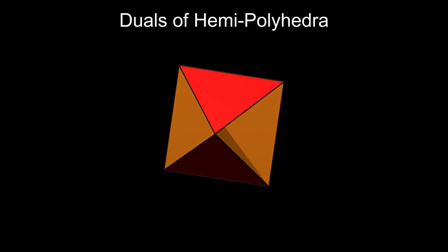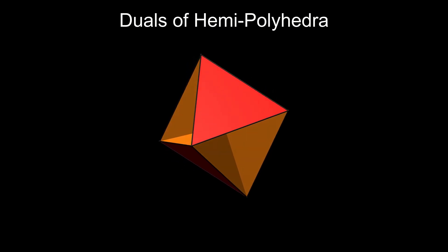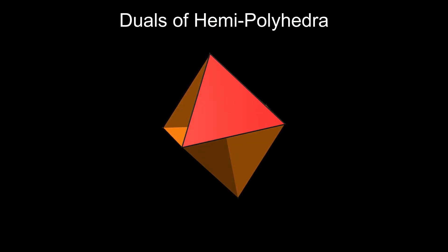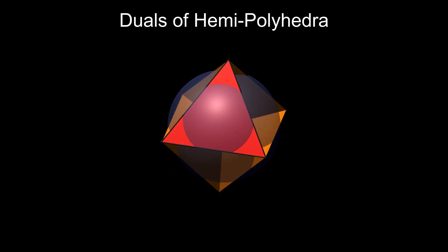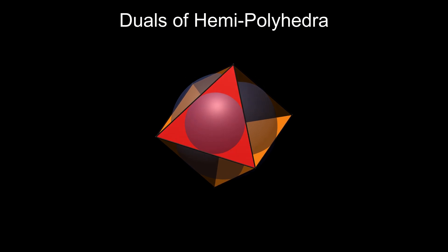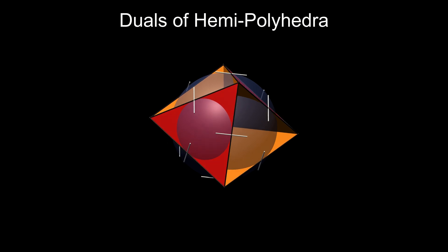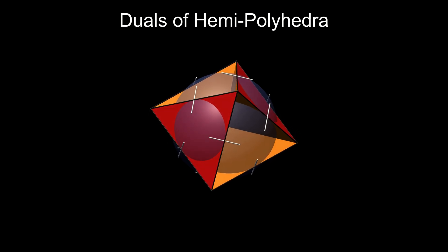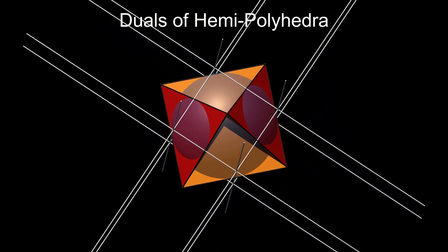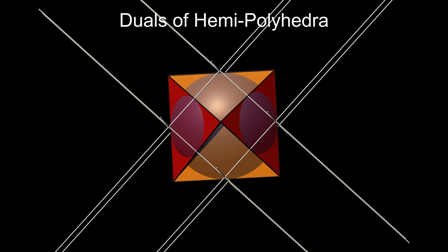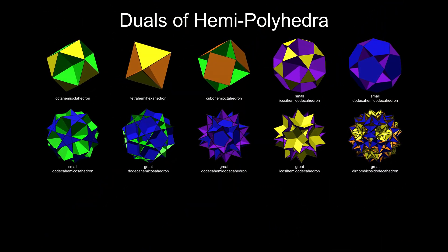Some of the uniform polyhedra have faces that pass through the centre of the polyhedron. These are known as hemipolyhedra. If we attempt to find the dual to any of these, such as this tetrahemihexahedron, which has three square faces passing through its centre, the perpendicular lines to the edges around these faces will be parallel, so they never intersect and the dual vertex cannot be found. This means that the ten uniform hemipolyhedra have no dual, and neither does Skilling's figure.